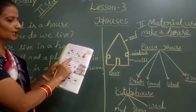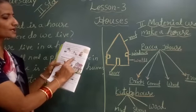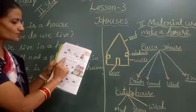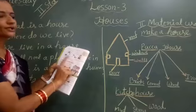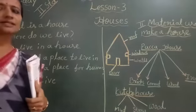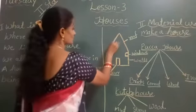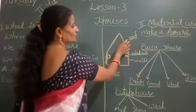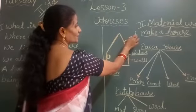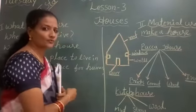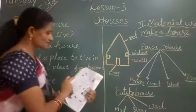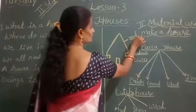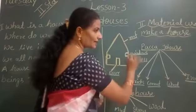A house has a roof, wall, doors and windows. There are different rooms in a house for different uses. I will draw one small house. See here — what is this? Roof. What is the spelling of roof? R-O-O-F. A house has a roof.